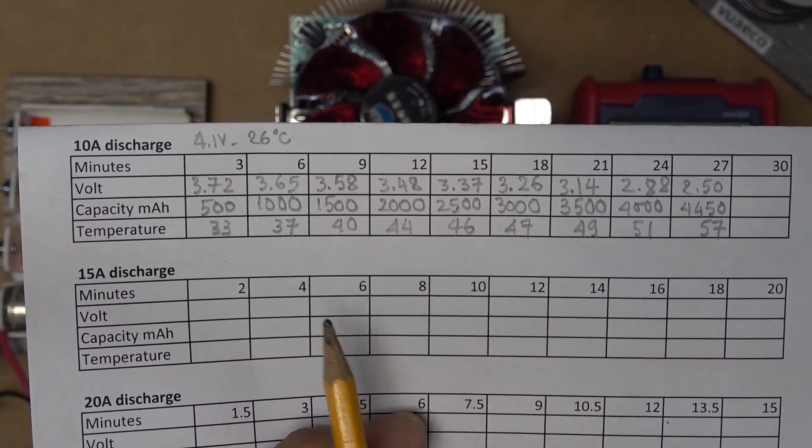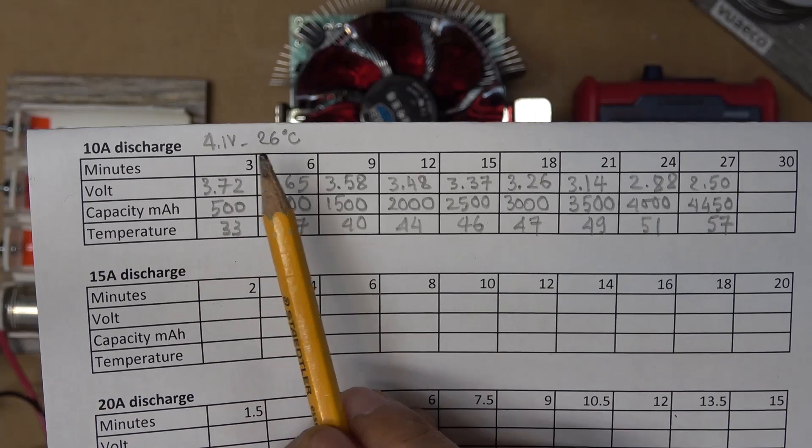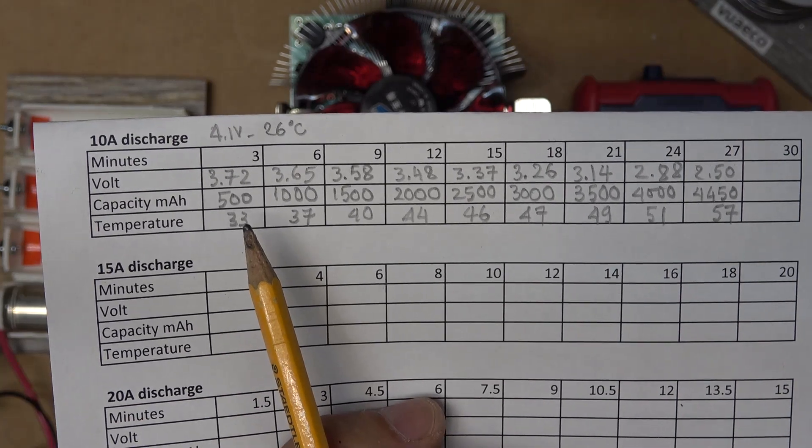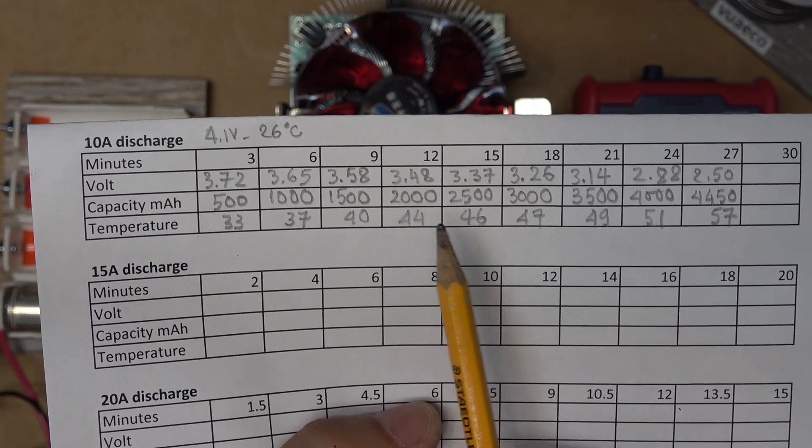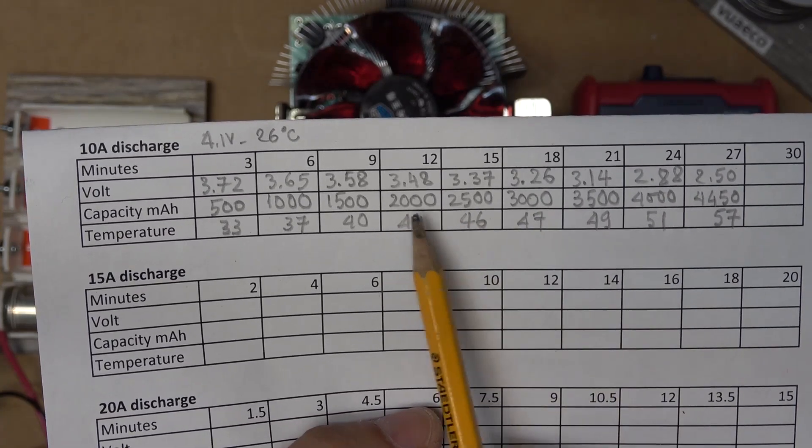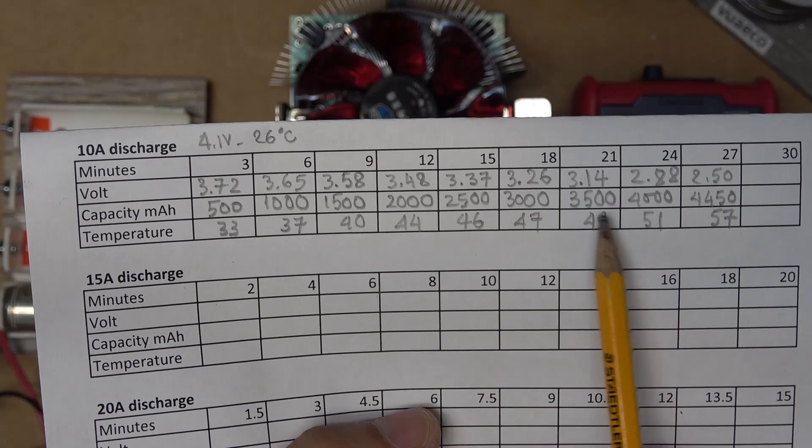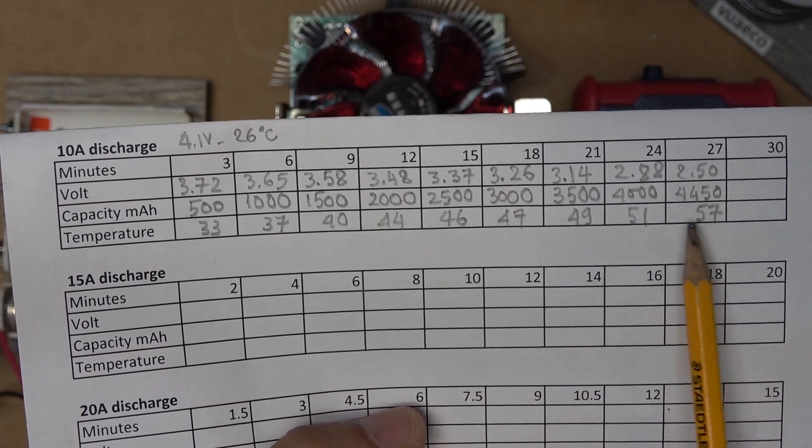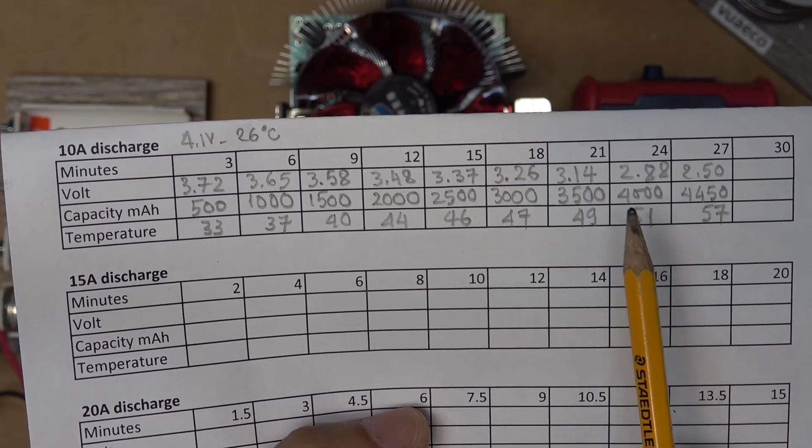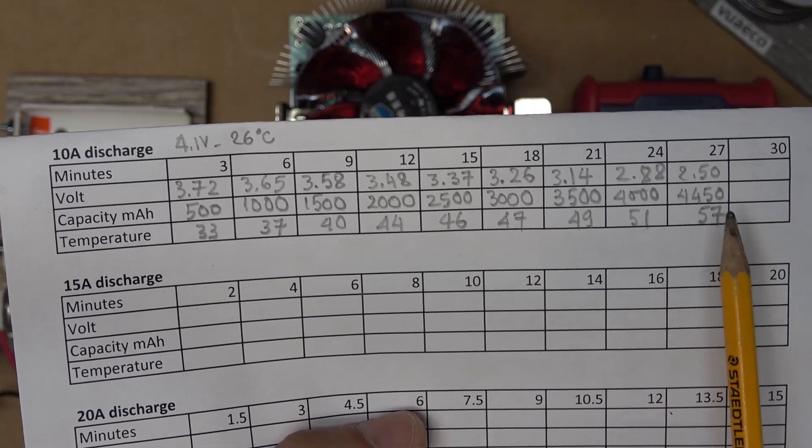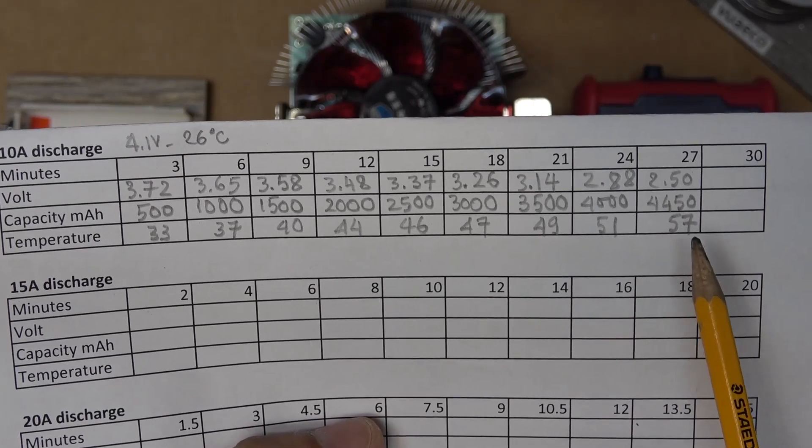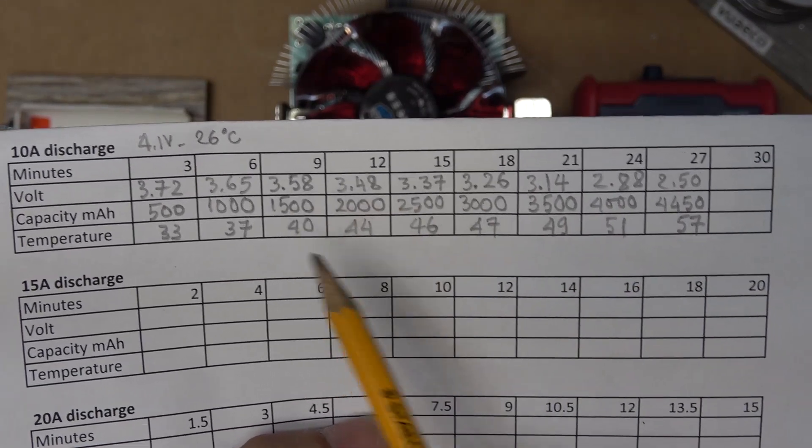Here is the result for the 10 amp discharge. So it started at room temperature at 26 degrees Celsius. And then the temperature steadily increased and stabilized out at around between 45 to 50 degrees Celsius during the middle of the test. And then at the end when it's almost out, the temperature quickly shot up to 57 degrees. That means you don't want to discharge the battery all the way to the end because at the end, it is a lot hotter than during the test.